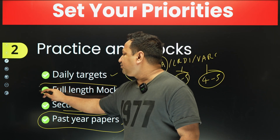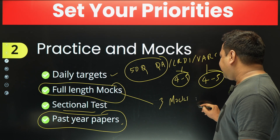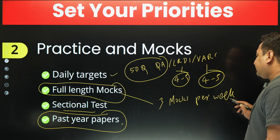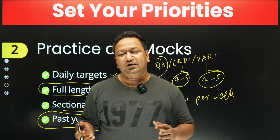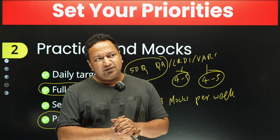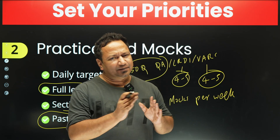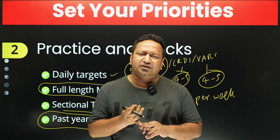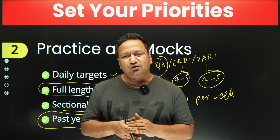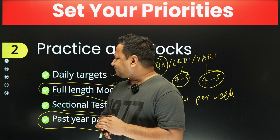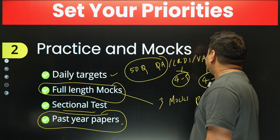Full-length mocks are very important. You should be doing three mocks per week from now onwards, with proper analysis. Analysis is very important because you will get to know your strong points and weak points, and which areas need more work. If you feel there is a weak point with less weightage in CAT — for example, permutations and combinations or number theory only have 1-2 questions — you don't need to put in too much effort there. But for relevant high-weightage topics where you are weak, you must put in more effort. That is why analysis is very, very important.